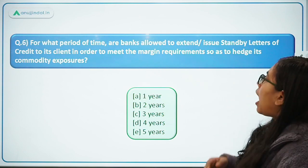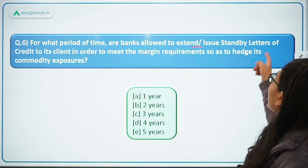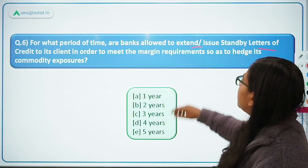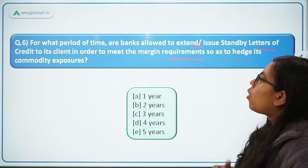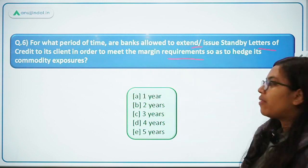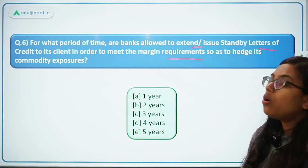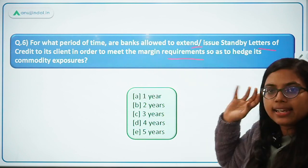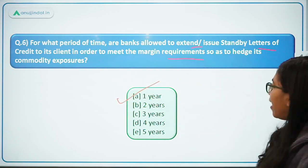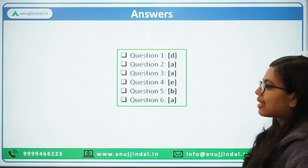Question 6: For what period of time are banks allowed to extend or issue standby letters of credit to clients in order to meet margin requirements to hedge commodity exposures? The answer is a maximum period of one year. Option A is the correct answer.